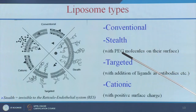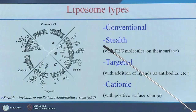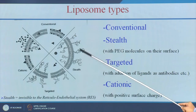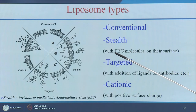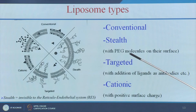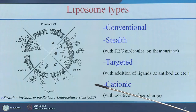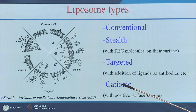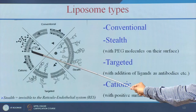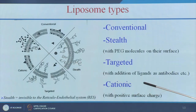The types of liposomes include: conventional liposomes; stealth liposomes, where the surface is covered with polyethylene glycol molecules, allowing them to escape from the reticuloendothelial system; targeted liposomes, where antibodies or specific ligands are added to target specific cells; and cationic liposomes, which have a positive surface charge. Since DNA and cells are negatively charged, cationic liposomes can easily bind and are useful for various drug delivery applications.